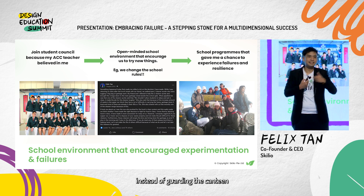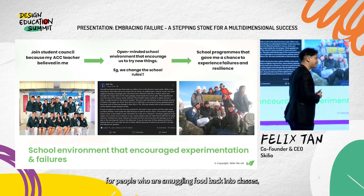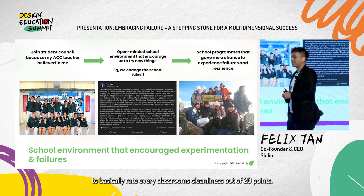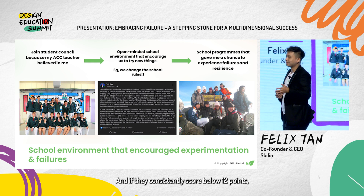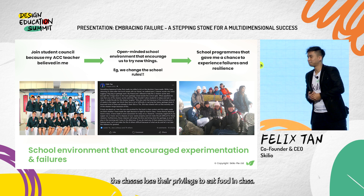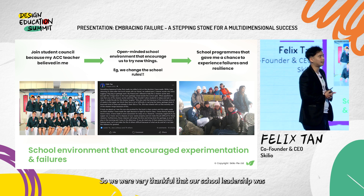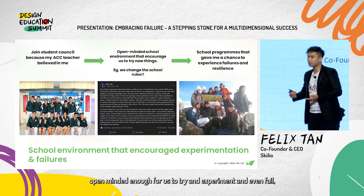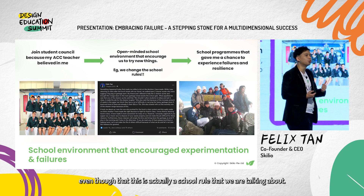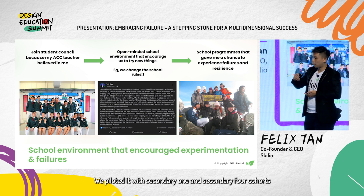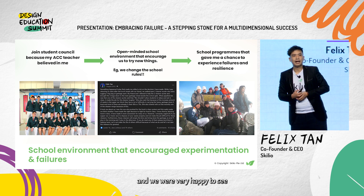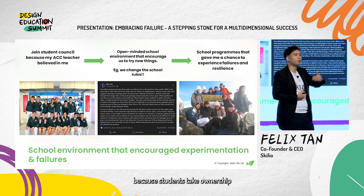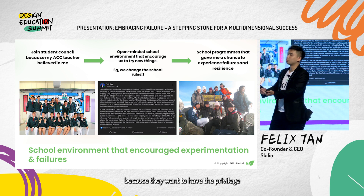Student councillors, instead of guarding the canteen for students smuggling food back into class, would now patrol classrooms every week and rate each classroom's cleanliness out of 20 points. If a class consistently scored below 12 points, they would lose their privilege to eat in class. We were very thankful that our school leadership was open-minded enough to let us try, experiment, and even fail — even though this involved a school rule. We piloted it in the Secondary One and Secondary Four cohorts, and we were happy to see that classroom cleanliness dramatically improved because students took ownership, wanting to keep the privilege of eating in class.